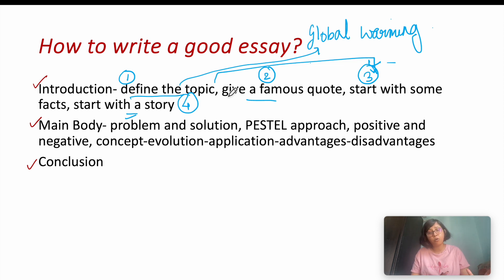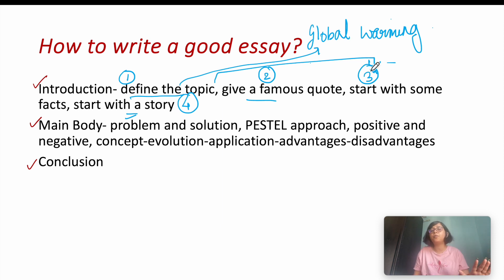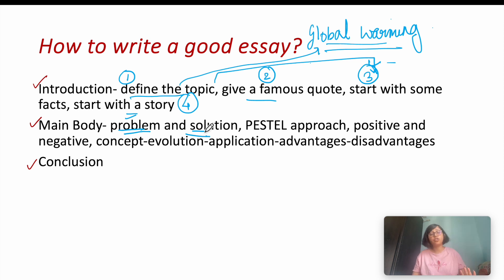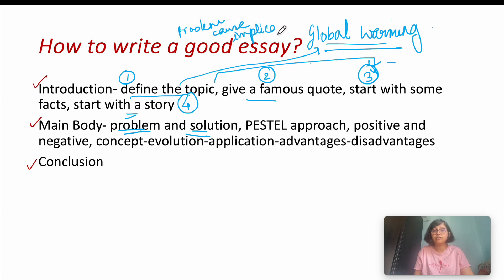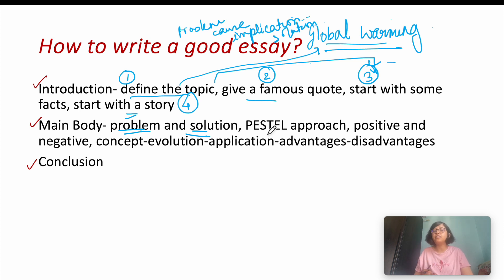Next is the main body. There are different ways to write it. If the topic concerns a problem — like global warming — you can use the problem and solution method. You define the problem, talk about its causes, then the implications or effects, and finally the solution.